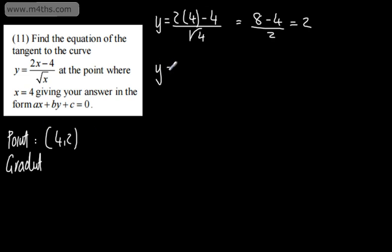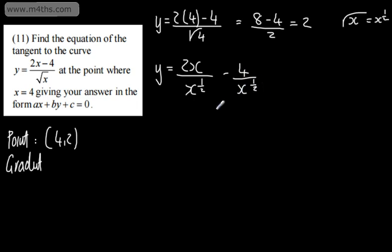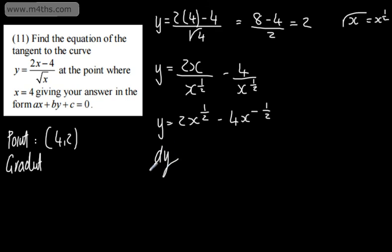Now we split this up. We have 2x over root x, and since root x = x to the half, x divided by x to the half gives x to the one-half. So the function becomes 2x to the one-half minus 4x to the minus one-half. So dy by dx: multiplying down gives 2 lots of a half, which is 1, dropping the power by 1 gives x to the negative one-half. For the second term, multiplying down gives plus 2, then x to the power of negative 3 over 2.